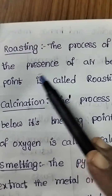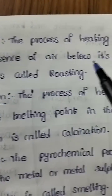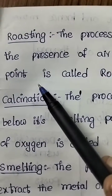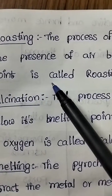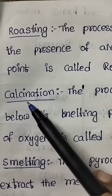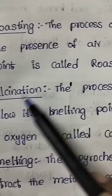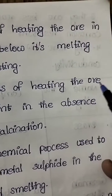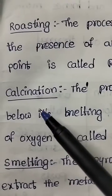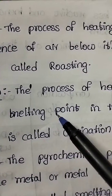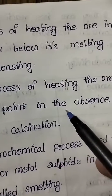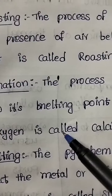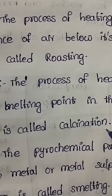...in the presence of air below its melting point is called roasting. Calcination: the process of heating the ore below its melting point in the absence of oxygen is called calcination.